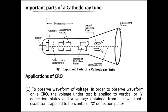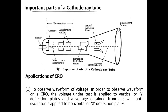Applications of CRO: To observe the waveform of a voltage, the voltage under test is applied to the vertical Y deflection plates and voltage obtained from the sawtooth generator is applied to the horizontal X deflection plates. To measure voltage and current, the deflection of the electronic beam is proportional to the voltage on the deflection plates. The CRT screen is calibrated in terms of voltage — that means volt per centimeter. The value of current can be obtained by measuring the voltage drop that causes a resistance connected in the circuit. In order to measure phase relations and frequency, Lissajous patterns are obtained using the CRT screen.